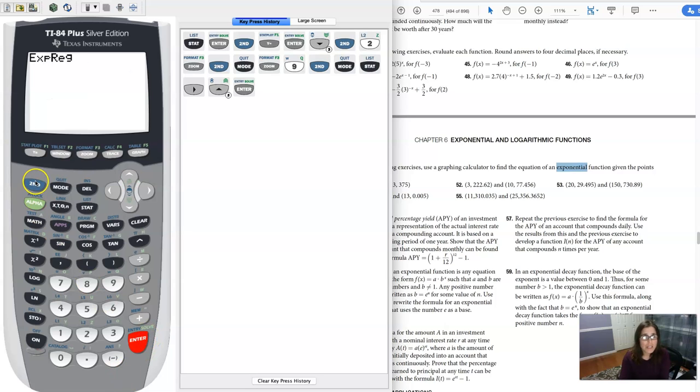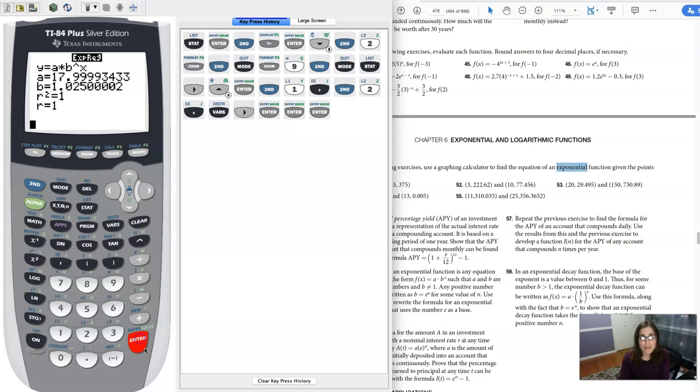Get to exponential regression and then I just need to do L1 comma L2 and for me personally, I always just get in the habit of storing it into y1 and then when I run that, you can see there's my exponential function. So I've got my initial value at about 18 and my base is 1.025.